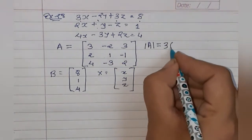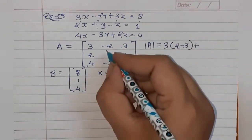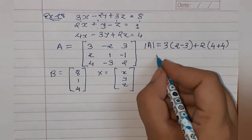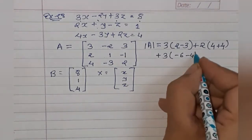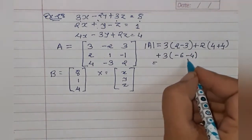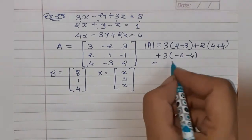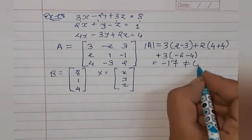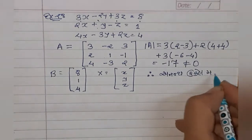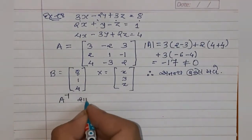પહેલી હારના સંદર્ભ માં det(A) ની ગણના: 3(1·2 - (-1)·(-3)) - (-2)(2·2 - (-1)·4) + (-3)(2·(-3) - 1·4). ગણતરી કરતા: 3(2-3) + 2(4+4) - 3(-6-4) = 3(-1) + 2(8) - 3(-10) = -3 + 16 + 30 - ... det(A) ≠ 0 (minus 17 મળે), તેથી અનન્ય ઉકેલ મળે.